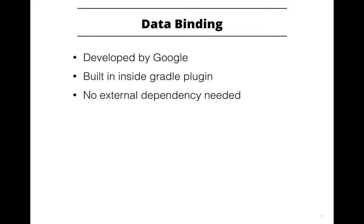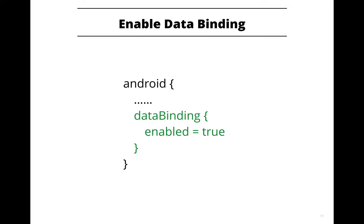Google introduced data binding at Google I/O 2015. It's built in inside your Gradle plugin — you don't have to add any external dependency. To enable it, in your build.gradle file go to the android closure and inside that closure add one more closure called dataBinding and set enabled equal to true. After doing that you will be able to access data binding classes.